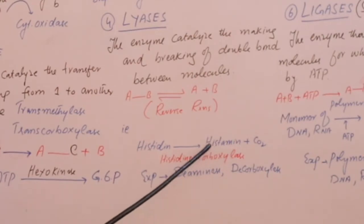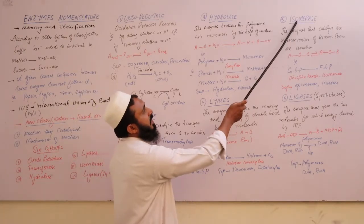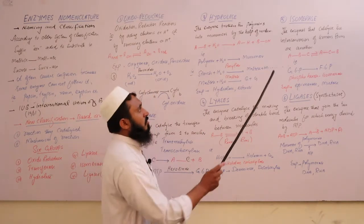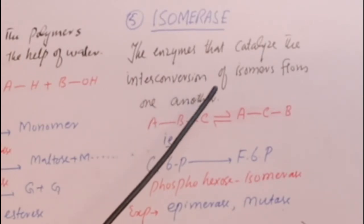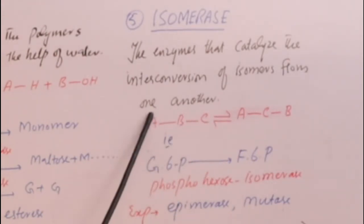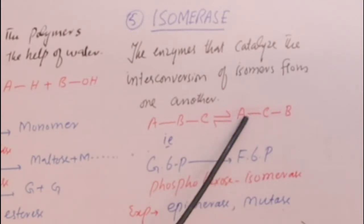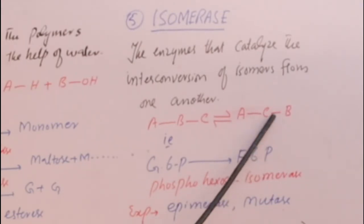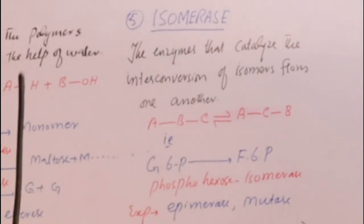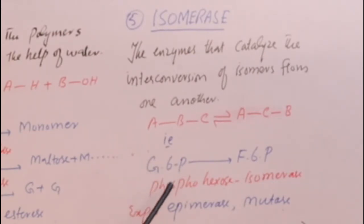Other lyase examples include removal of an amino group (deaminases) and removal of a carboxyl group (decarboxylases). The fifth group is isomerases — enzymes that catalyze the interconversion of isomers. These reactions involve groups switching positions within the same molecular formula, and they are always reversible.